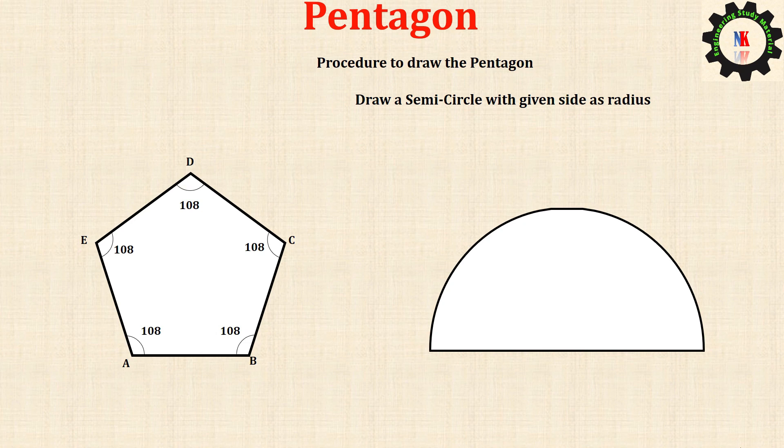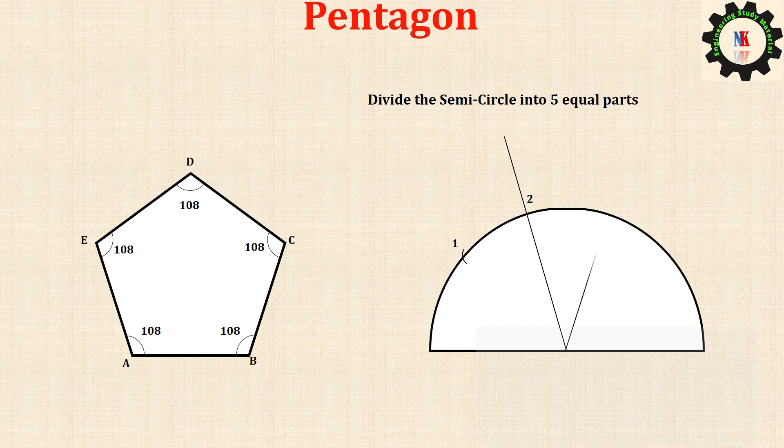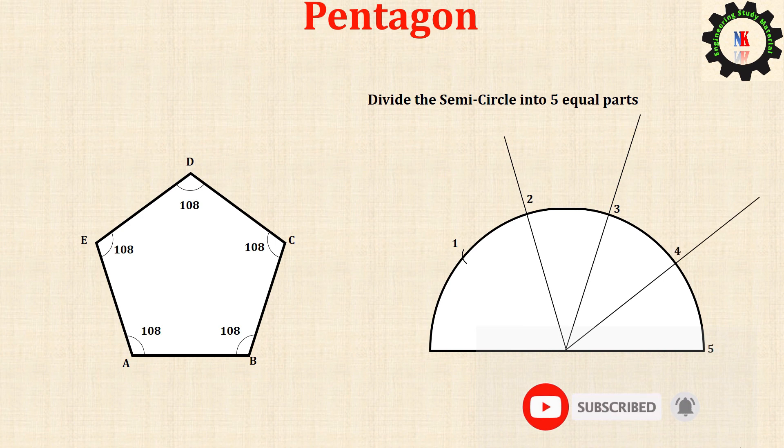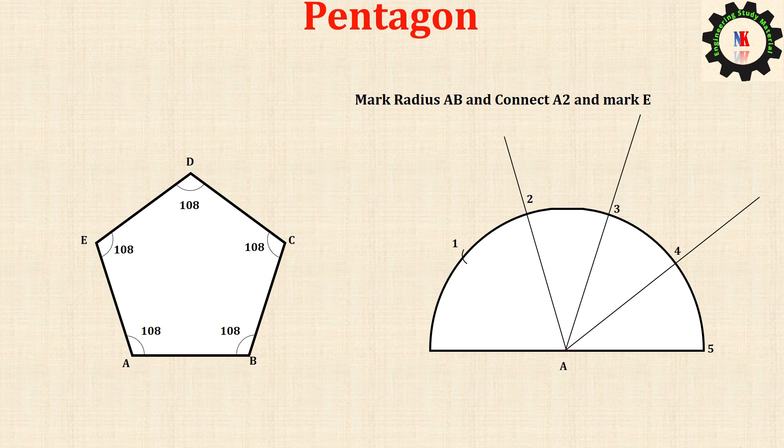Divide the semicircle into 5 equal parts. Mark radius AB and connect A to 2, and mark E.